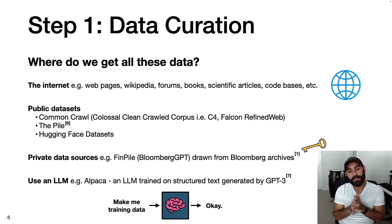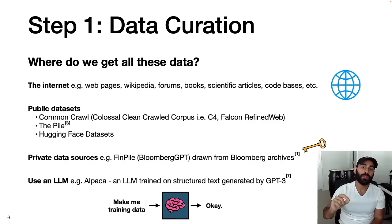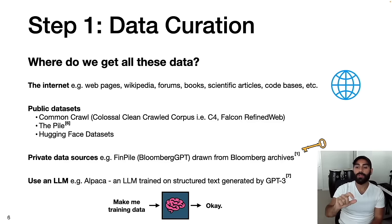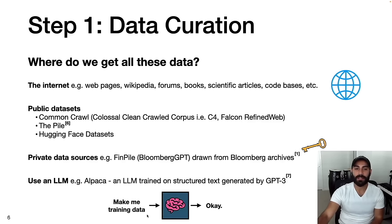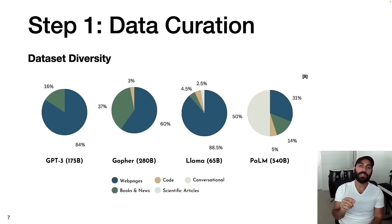Finally, and perhaps most interesting, is using an LLM to generate the training data. A notable example is the Alpaca model from researchers at Stanford. What they did was train an LLM, Alpaca, using structured text generated by GPT-3. Essentially, you pass a prompt like 'make me training data' into a large language model, and it spits out the training data for you.